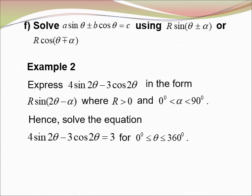Section F: Solve A sin θ ± B cos θ = C using R sin(θ ± α) or R cos(θ ∓ α). Example 2: Express 4 sin θ − 3 cos θ in the form R sin(θ − α), where R > 0 and α is between 0° and 90°. Hence solve the equation 4 sin θ − 3 cos θ = 3 for θ between 0° and 360°.